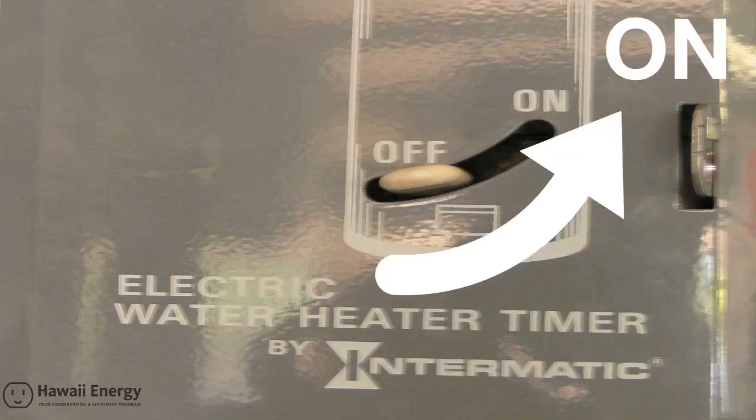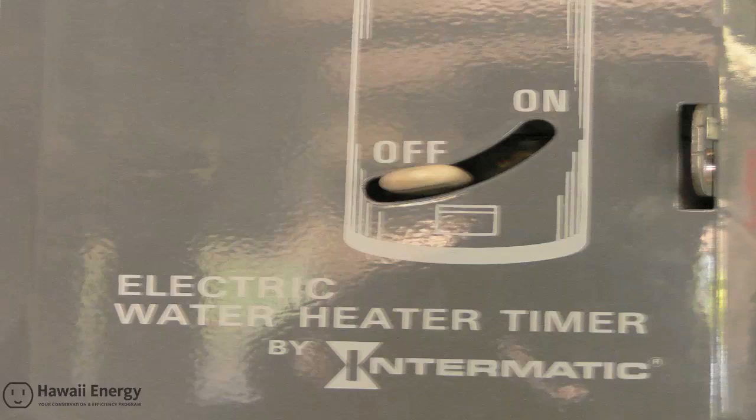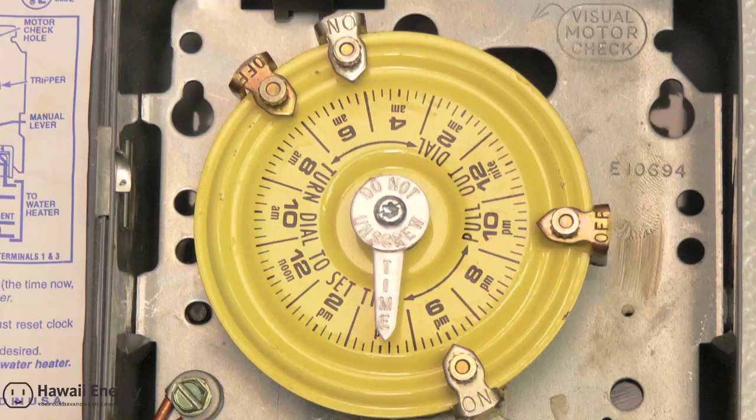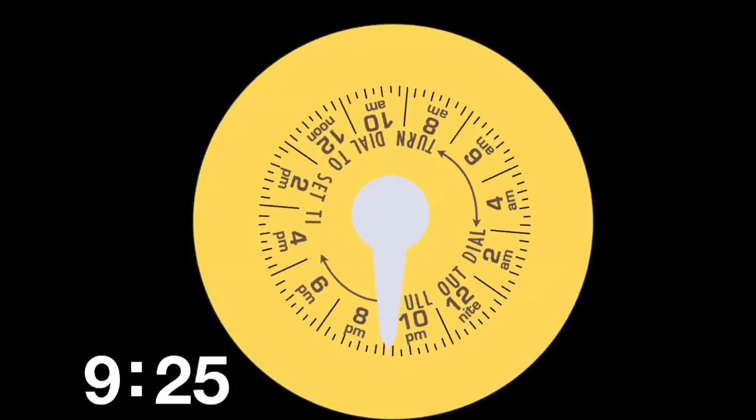Let's take a look inside the timer and get familiar with some of the basic parts. Here we see the actual timer featuring a yellow dial. Unlike a standard clock where hands pass over the numbers, the dial of this clock passes under a time pointer, a single hand that does not move. One full rotation equals 24 hours.